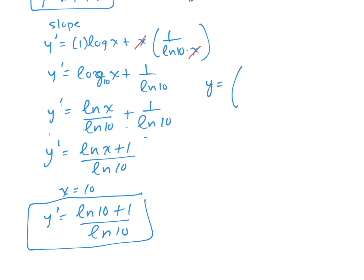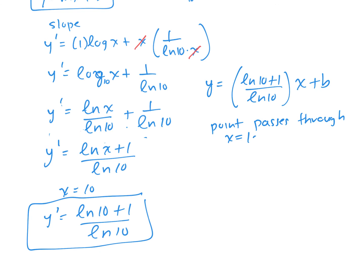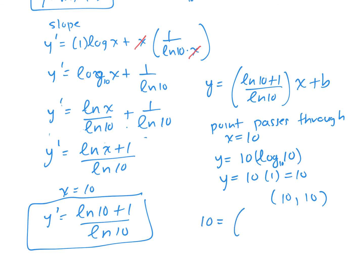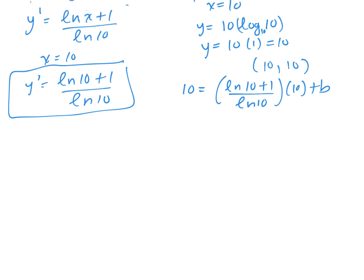So the tangent line is y equals [(ln(10) + 1) / ln(10)] · x + b. To find b, we need a point on the curve. At x equals 10, y equals 10 · log(10) = 10 · 1 = 10, so the point is (10, 10).